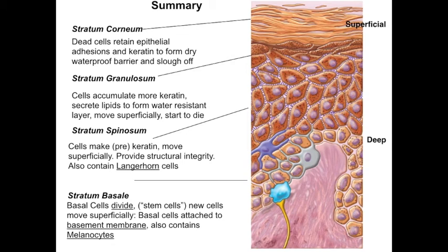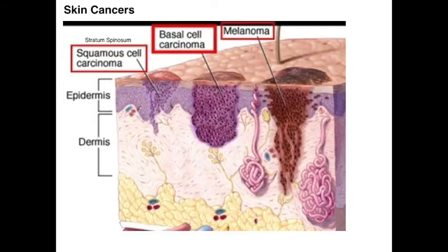The last thing to mention as part of the epidermis are the more common skin cancers and how they relate to these sub-layers. Basal cell carcinoma is the most common, although the least dangerous type — the stratum basale cells begin proliferating and push into the dermis and hypodermis, essentially doing what basal cells do but in the wrong direction. Squamous cell carcinoma arises from the keratinocytes of the stratum spinosum; because these cells do not usually divide much like the stratum basale cells, uncontrolled growth indicates something has gone wrong, making these more dangerous than basal cell carcinoma.